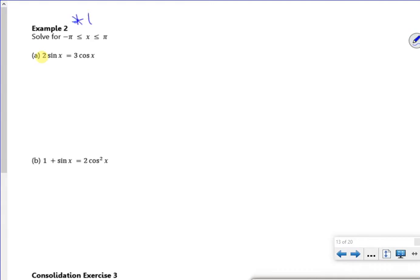So these are the ones where I'm going to use tan x, sin x over cos x, and sin squared x plus cos squared x is 1. So I want the cos down there and I want the 2 down there. So I've got sin x over cos x is 3 over 2. So I've got tan x is 3 over 2.